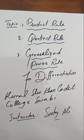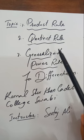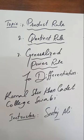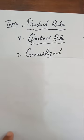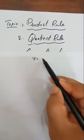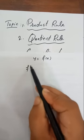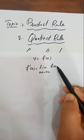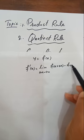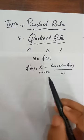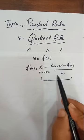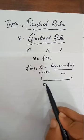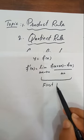Bismillahirrahmanirrahim. Assalamu alaikum. In this video lecture we will discuss the product rule, quotient rule, and generalized power rule for differentiation. The definition of a derivative for a function y equal to f of x is given by f'(x) = limit as delta x tends to 0 of [f(x + delta x) minus f(x)] divided by delta x, if this limit exists. The derivative is the slope of a tangent line at a particular point. This definition is called the first principle rule of differentiation.